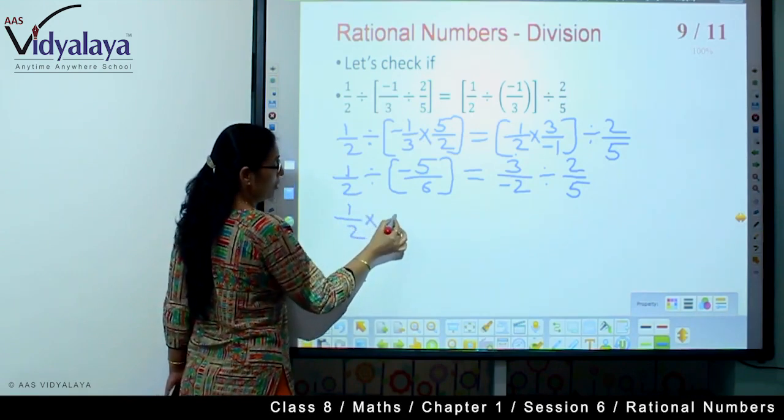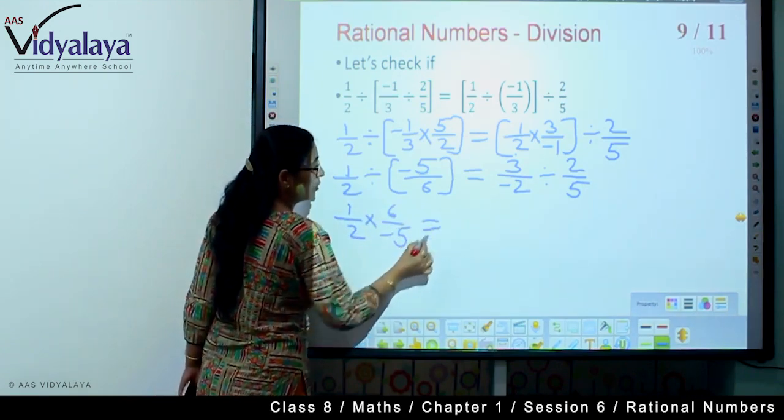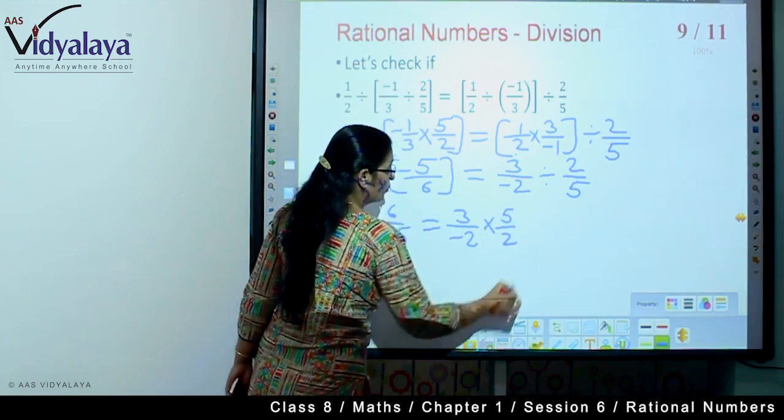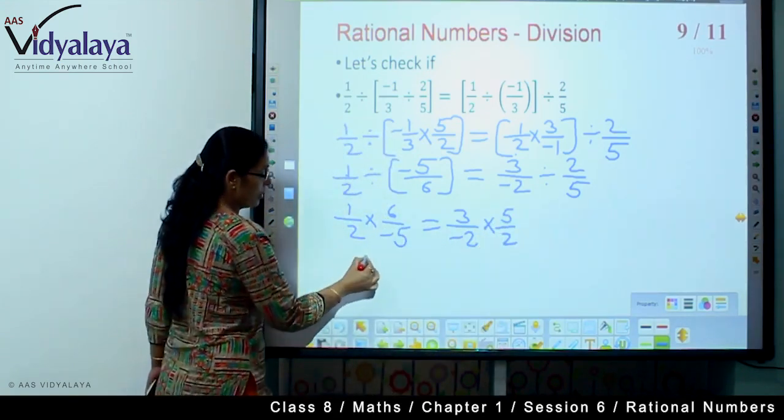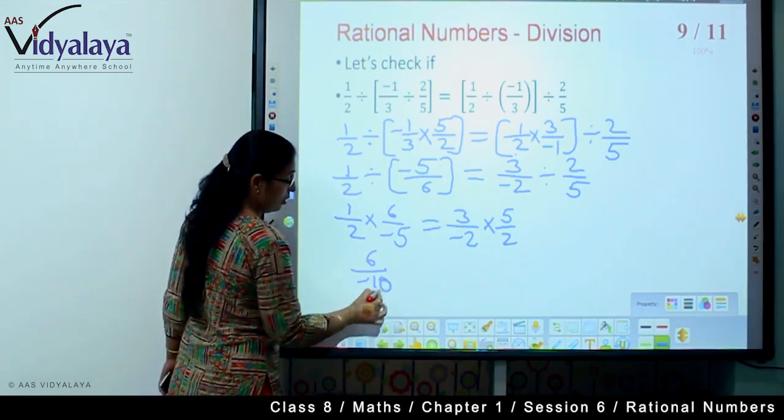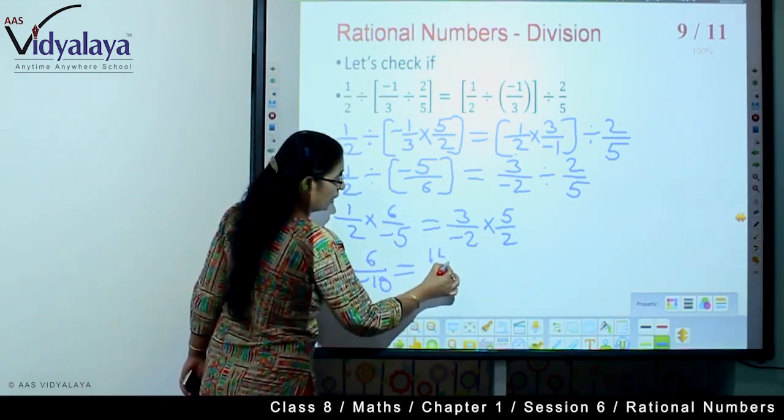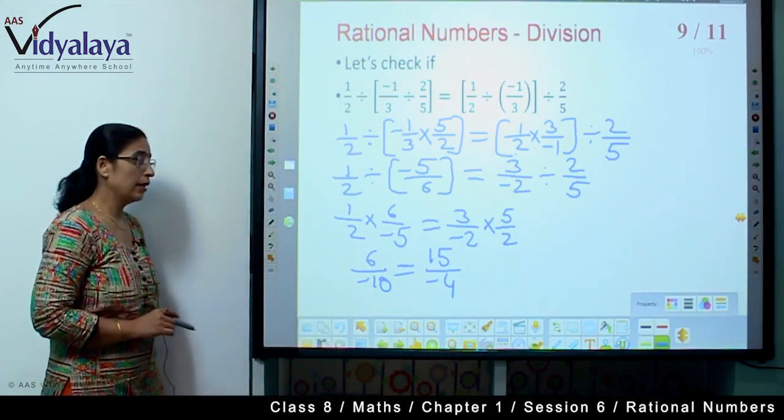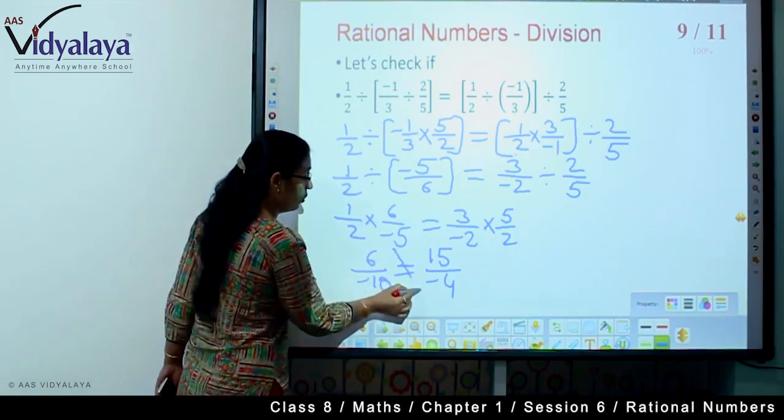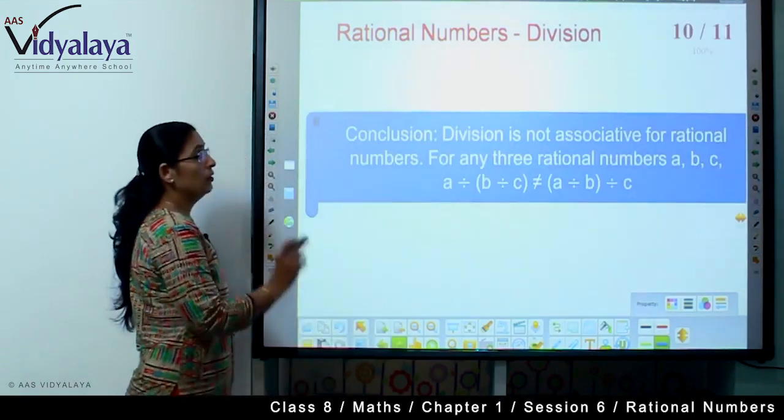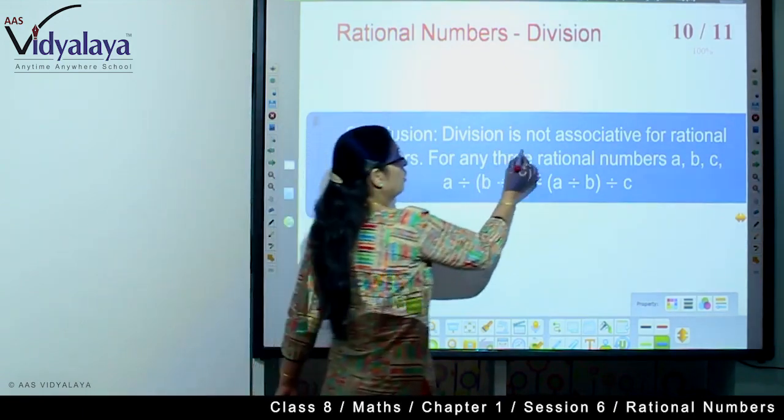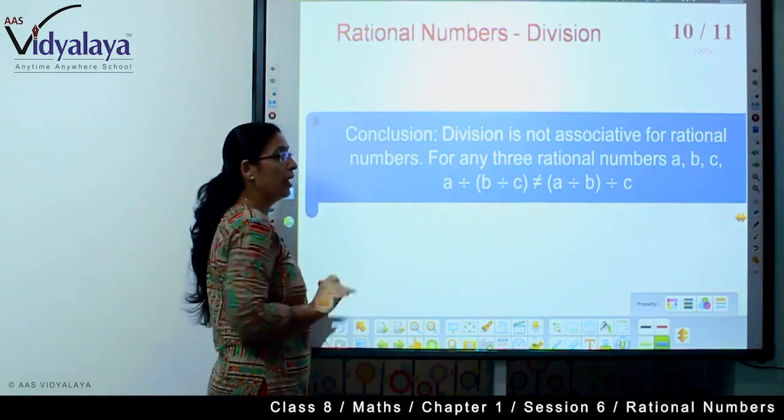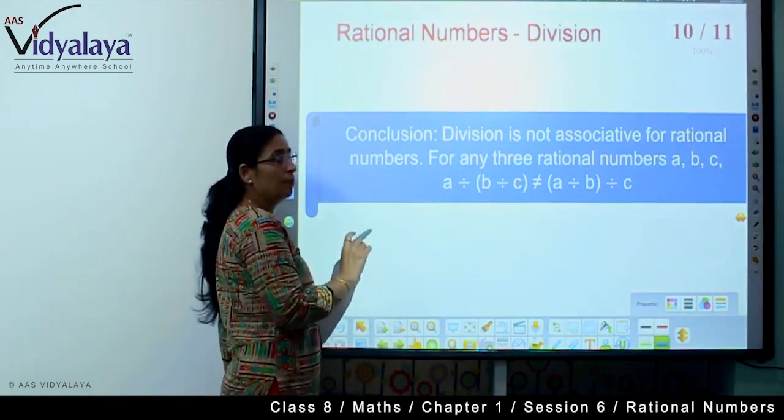Division place multiplication, reciprocate the values. So 6 upon minus 5 equals 3 upon minus 2 multiply sign and 5 upon 2. This equals 6 upon minus 10 equals 50 upon minus 4.